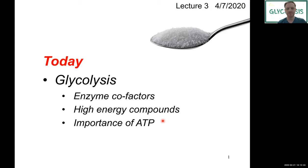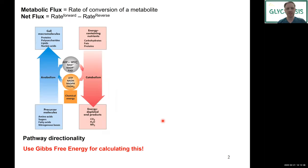Just a brief recap to connect us to the previous lectures: in lecture 2 we discussed the opposing pathway concepts of anabolic and catabolic pathways, how they are connected through our common currency — primarily ATP and NADH. We started to talk about metabolic flux and the rate of conversion of metabolites, and how we can use Gibbs free energy to predict pathway directionality.